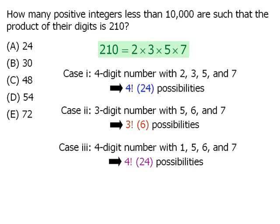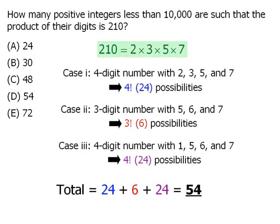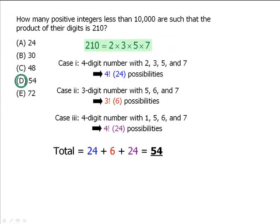So altogether, we need to add the number of possibilities from each of our three cases. When we do so, we get 54 different numbers. So our answer here is D.